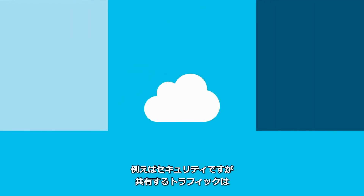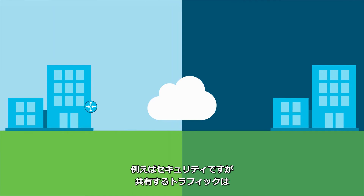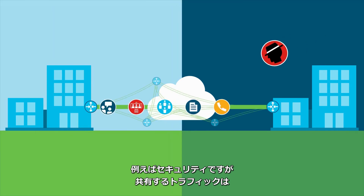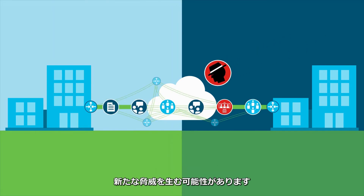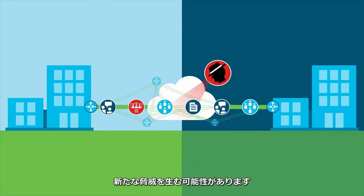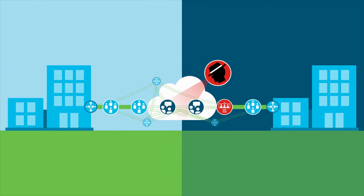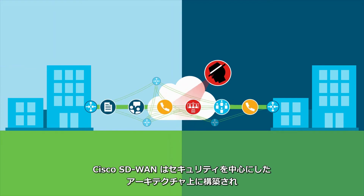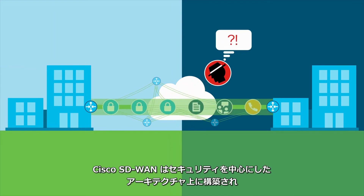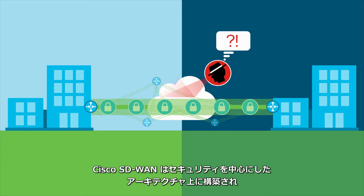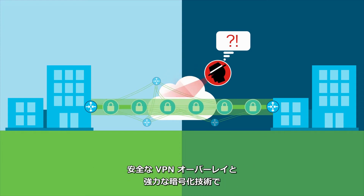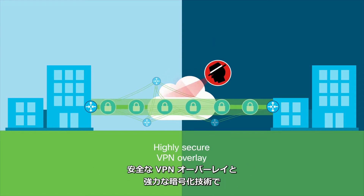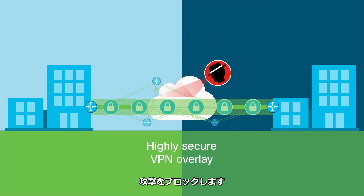Take security. Cisco knows moving traffic between shared links introduces new potential vulnerabilities. That's why Cisco SD-WAN is built on a threat-centric security architecture that blocks attacks with a highly secure VPN overlay and strong encryption for end-to-end network protection.